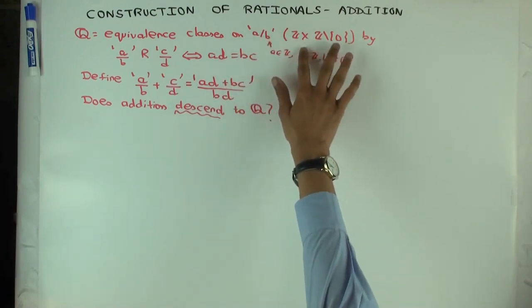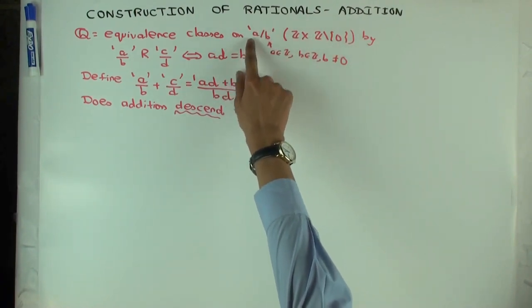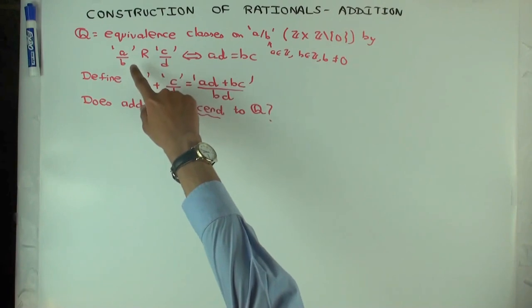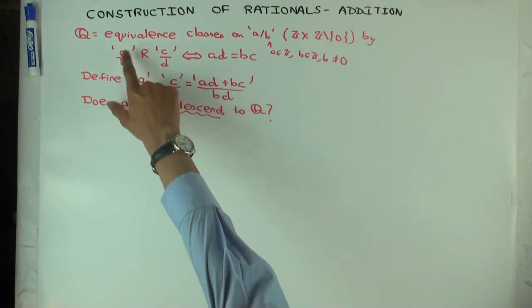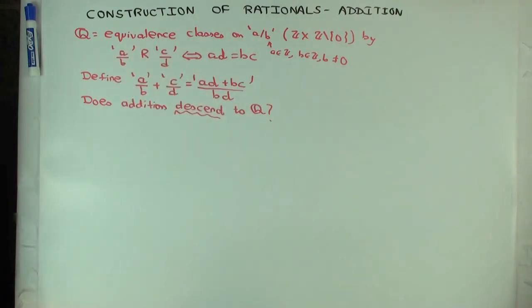I'll denote, instead of writing it as pairs a comma b, I'll write it as quote fractions. So quote a by b just means it's that thing which will ultimately, whose equivalence class will just be the usual rational number a over b.